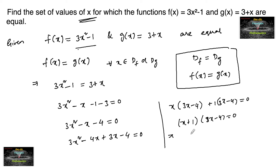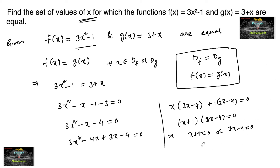Therefore, either x + 1 = 0 or 3x - 4 = 0, giving x = -1 or x = 4/3. For these two values, -1 and 4/3, the given functions are equal.